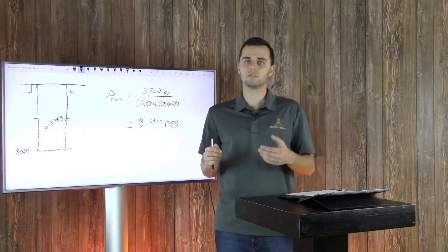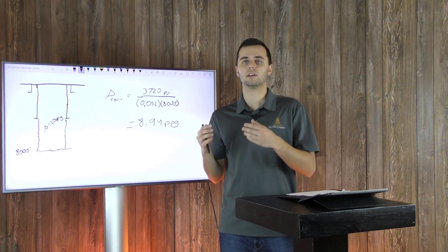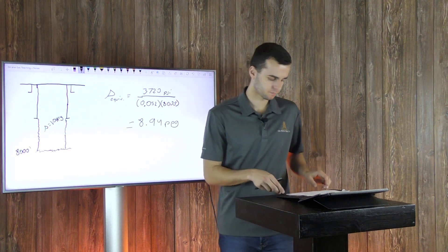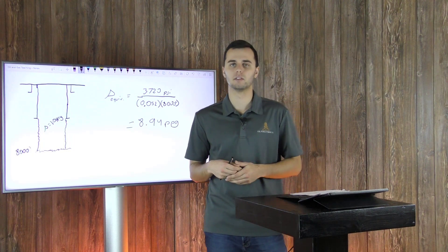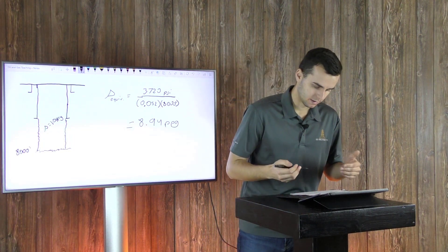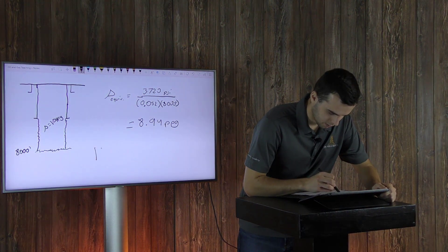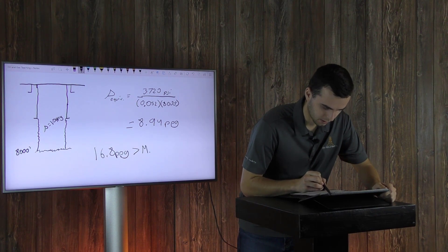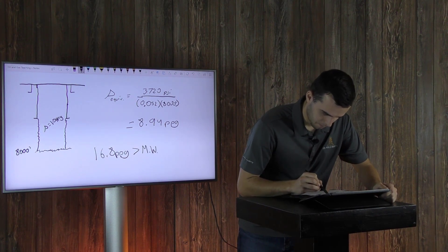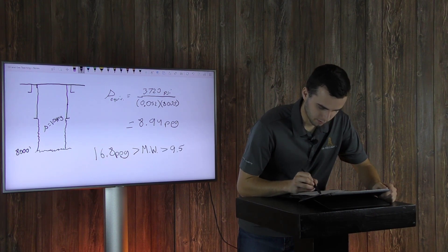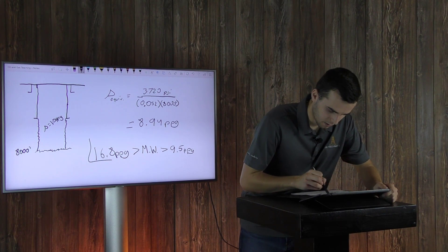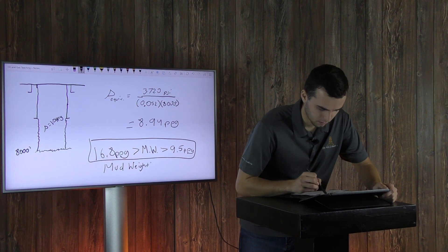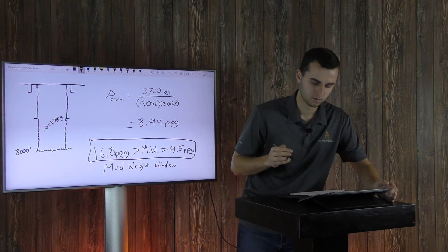And now using those values, we can determine the mud weight window. And you never want to have the values that you calculate be actually your exact mud weights that you'll allow out in the field on the drilling rig. You want to have some sort of safety factor. So let's assume a 0.5 pounds per gallon mud weight safety factor. And so that will give you a mud weight window of max 16.8 pounds per gallon. Your mud weight has to be less than that, but greater than 9.5 pounds per gallon. And so this right here is your mud weight window.